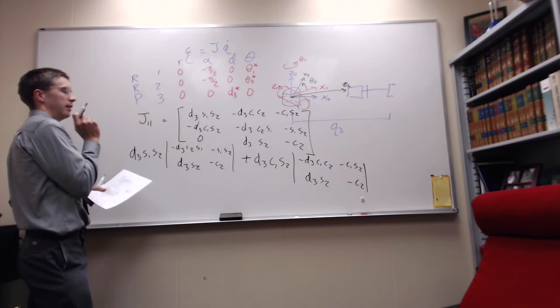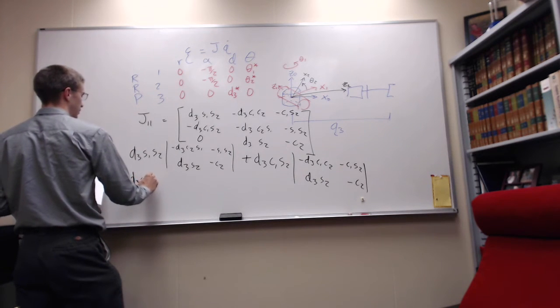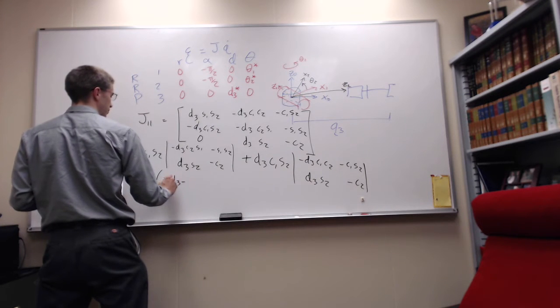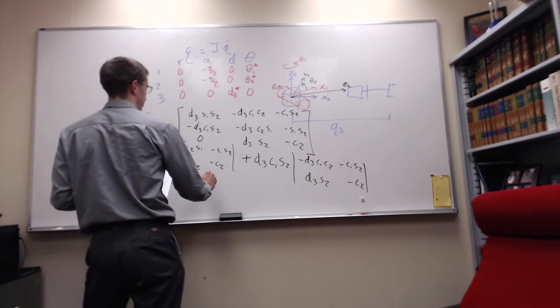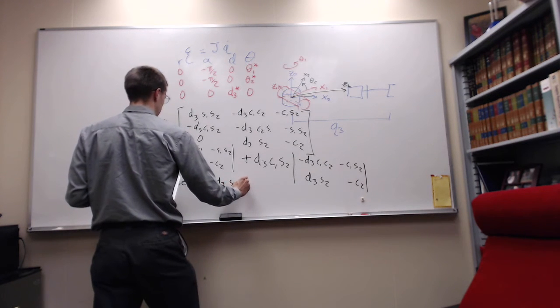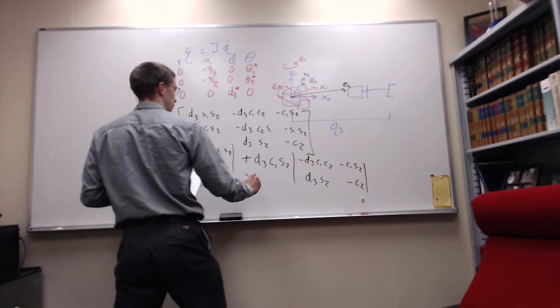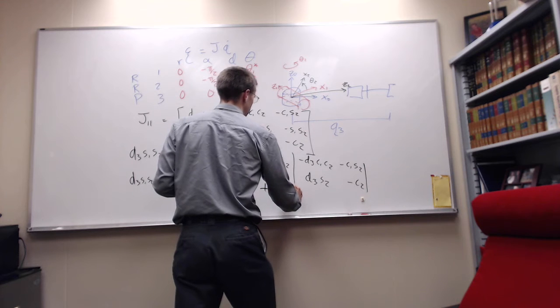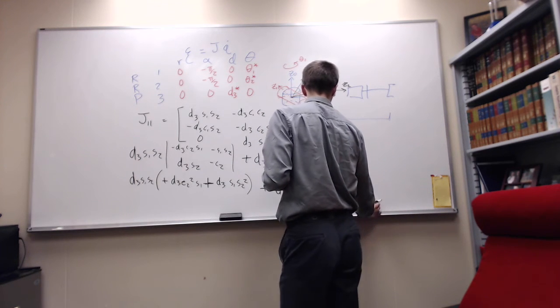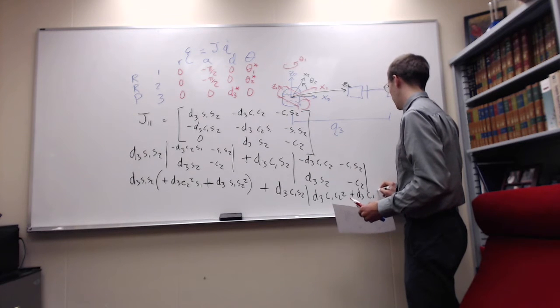So the next step is to evaluate this matrix. I get D3 S1 S2 times negative D3, positive C2 squared S1, minus D3 S1 S2, minus a negative gives us a plus, plus on this side. I've got D3 C1 S2 times D3 C1 S2 squared, minus a minus so plus D3 C1 S2 squared.